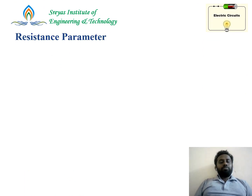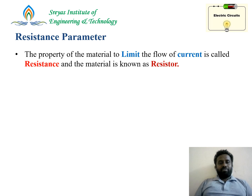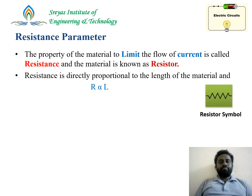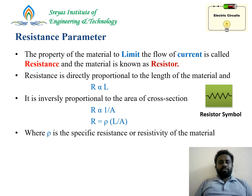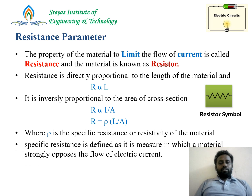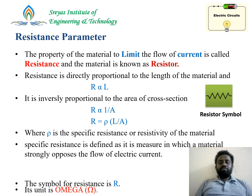Now, what is resistance? It is a property of a material to obstruct or limit the flow of current, and the material is known as a resistor. Resistance is directly proportional to the length L of the material and inversely proportional to the area of cross section A. So R = ρL/A, where ρ (rho) is called the specific resistance or resistivity of the material. Specific resistance is defined as a measure of how strongly a material opposes the flow of electrical current.